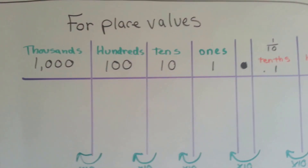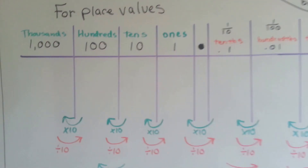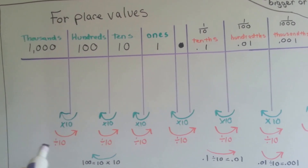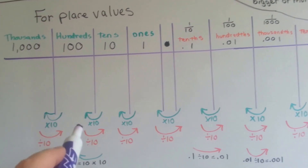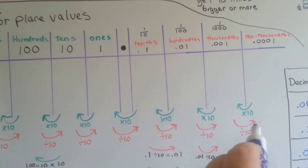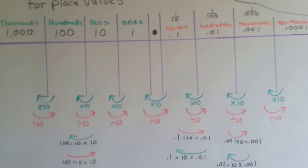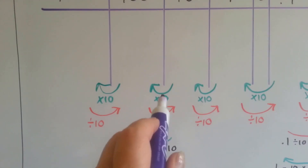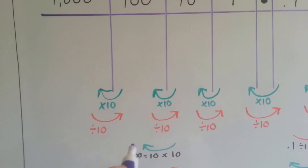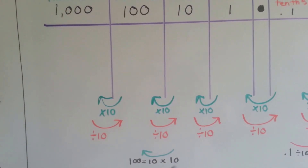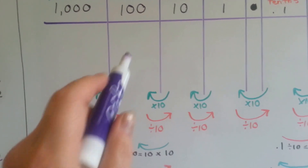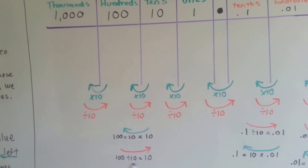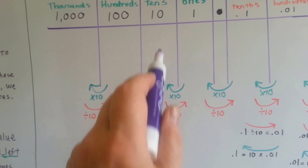So for our place values, every time we multiply by ten we get bigger, and every time we divide by ten we get smaller. Ten times ten is a hundred — we go from ten to a hundred because we multiplied by ten. But if we had a hundred and we divided it by ten, we would get smaller and go to ten.